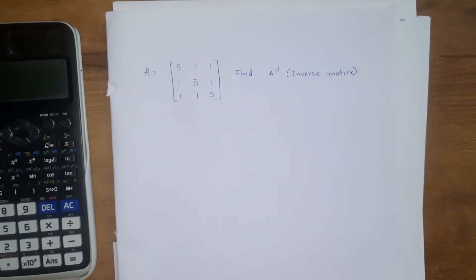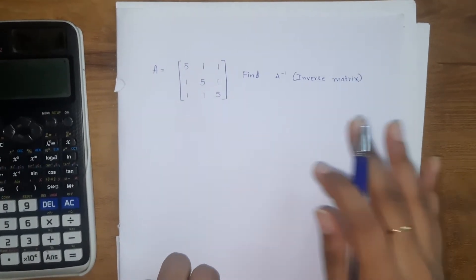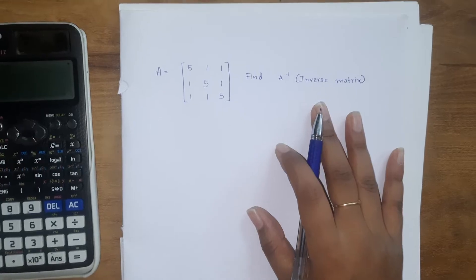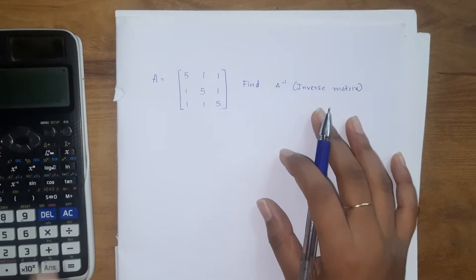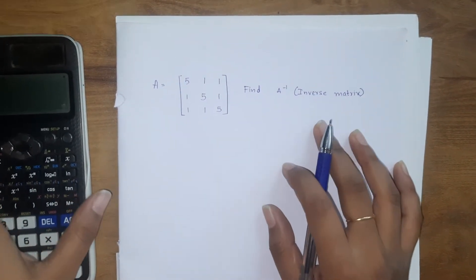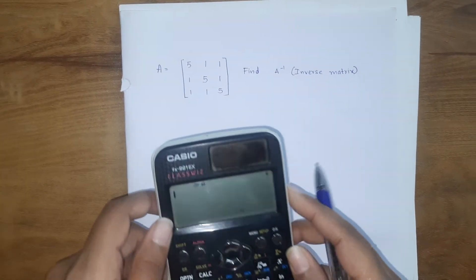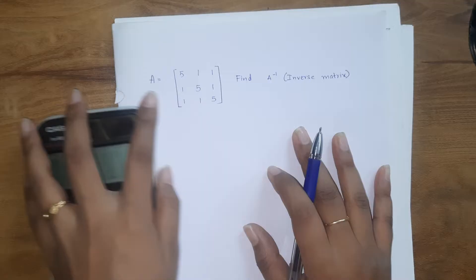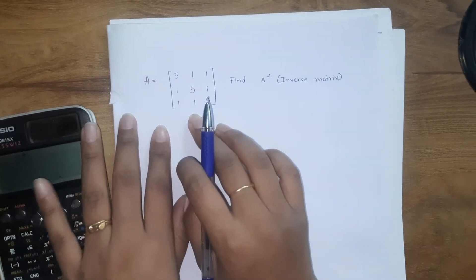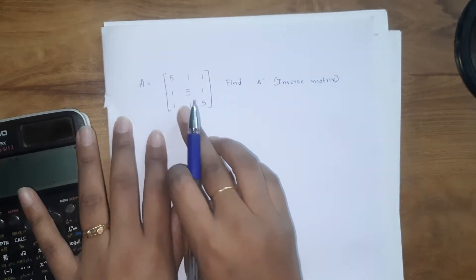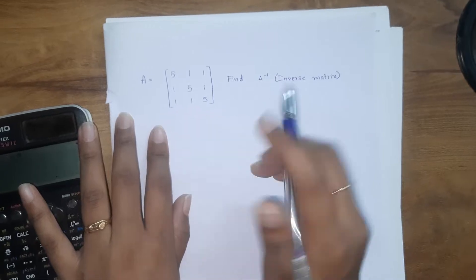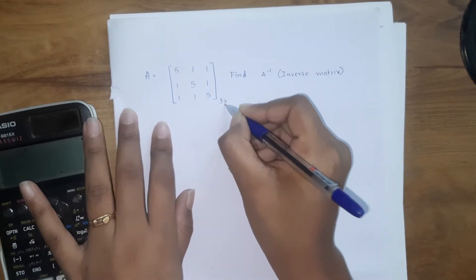Hello guys, this is Nerdy. Welcome back to my channel. Today we are going to discuss how to find the inverse of a matrix using the Casio fx-991EX calculator. So let's start. This is our given matrix: 5, 1, 1, 1, 5, 1, 1, 1, 5. This is a 3 by 3 matrix.